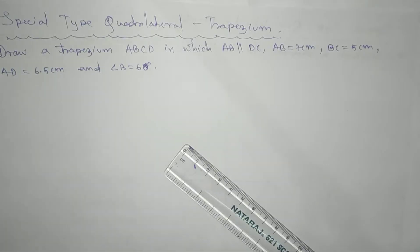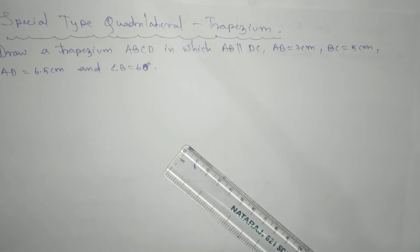So student, here we have a special type quadrilateral, that is trapezium. Question: draw a trapezium ABCD in which AB is parallel to DC, AB equals 7 cm, BC equals 5 cm, AD equals 6.5 cm, and angle B equals 60 degrees.